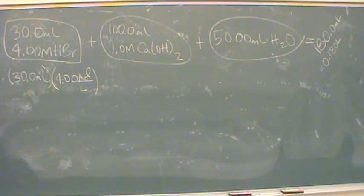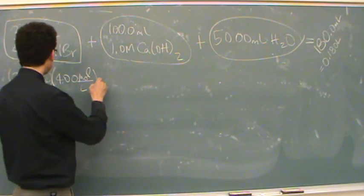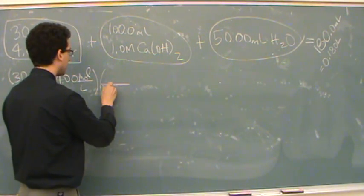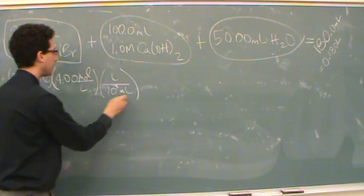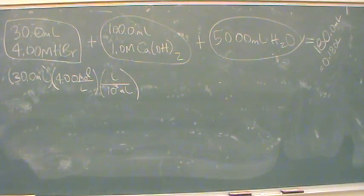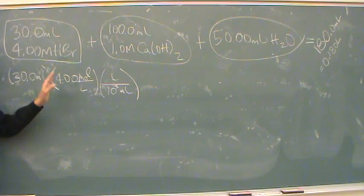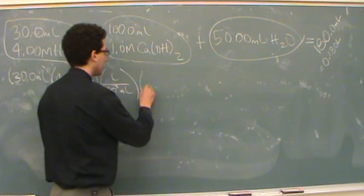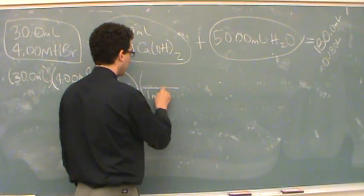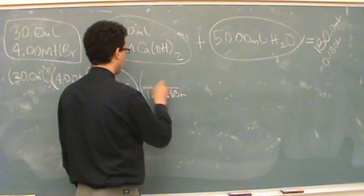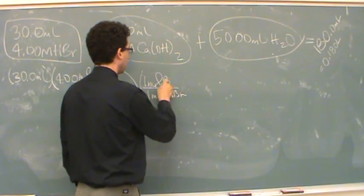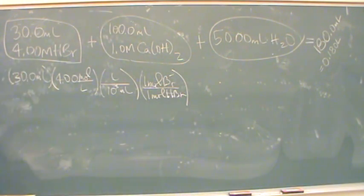So we've got 30 milliliters times 4.00 moles per liter of HBr. This is for the first solution. Then let's convert: there's 10 cubed milliliters in the denominator and a liter in the numerator. This is moles of HBr. Just to be complete, there's one mole of HBr for every one mole of Br minus. This will be the moles of Br minus.